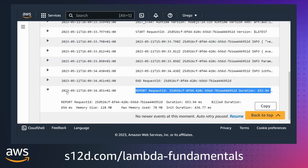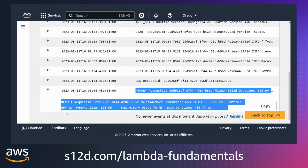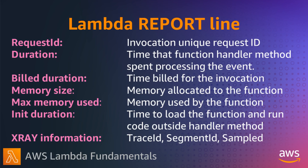The Report line provides information about the invoke. It includes the duration — the total invocation time for the handler function excluding the init code — the billed duration, the amount of memory allocated to the function, the actual memory used during the invocation, and the init duration, which is the time taken to run the init section of code outside of the main handler.